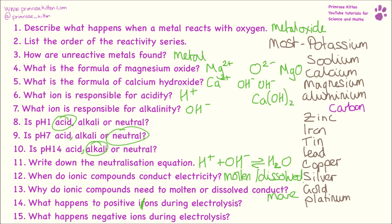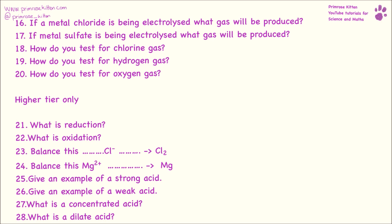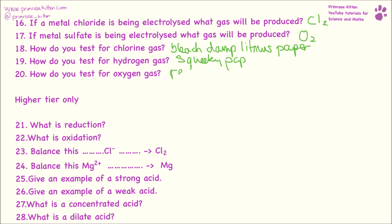What happens to the positive ions during electrolysis? They go to the negative electrode and the negative ions go to the positive electrode. If a metal chloride is being electrolysed, we are going to get chlorine gas produced. If a sulphate is being electrolysed, we are going to get oxygen gas produced — not sulphate gas as some of you might think. How do you test for chlorine gas? That is going to bleach damp litmus paper. Hydrogen gas gives a squeaky pop, and oxygen gas will relight a glowing splint.